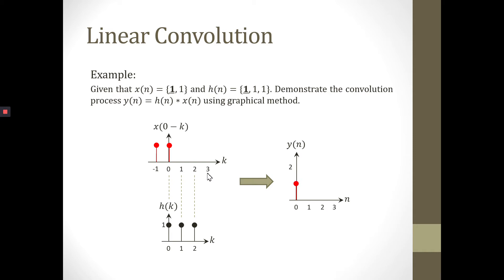The next step: we shift signal X using n equal to 1, meaning since this integer is positive 1, we shift X to the right by 1. For n equal to 0, we multiply with H value for n equal to 0: 1 multiplied by 1 equals 1. Plus for signal at n equal to 1, 1 multiplied by 1 equals 1. So we sum the multiplication values for n=0 and n=1, giving 1 plus 1 equal to 2.